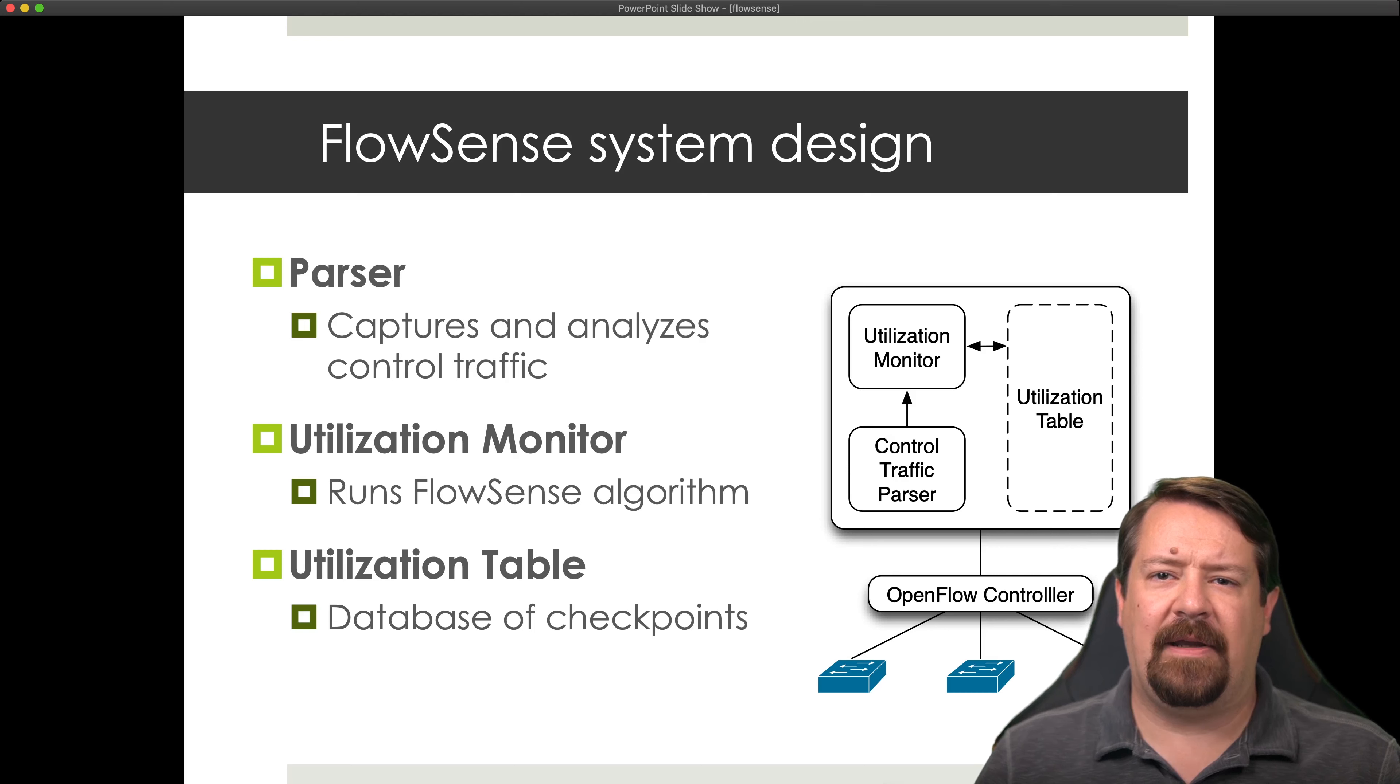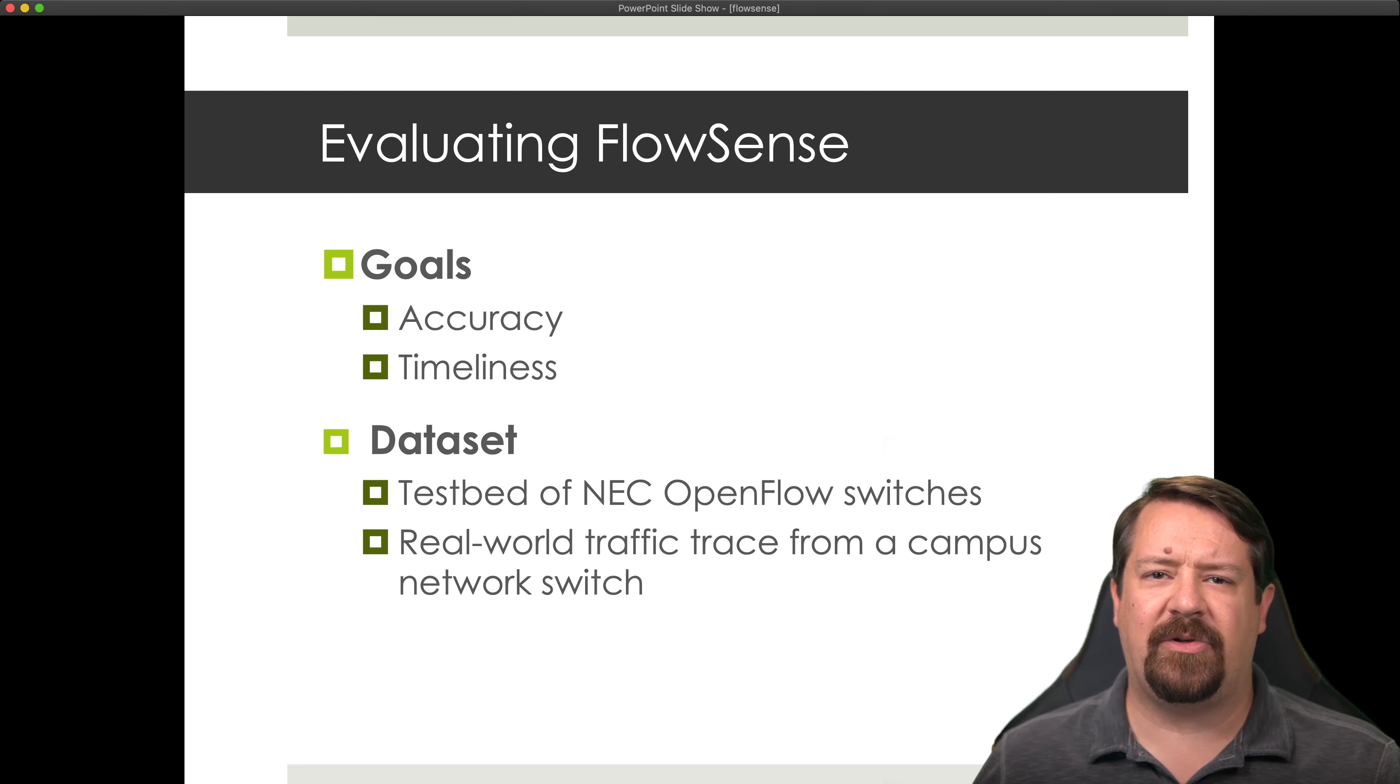So all of this is happening as a plugin to the OpenFlow controller. This plugin is maintaining a utilization table and running a utilization monitor, as well as a parser that observes the messages coming from the switches. We have two goals, which are accuracy and timeliness. These are quite commonly at odds with one another, meaning if you take more time, often you can perform more accurate measurement. But if you are time constrained, accuracy may suffer.